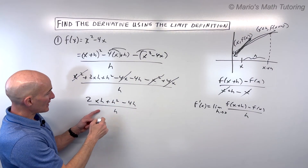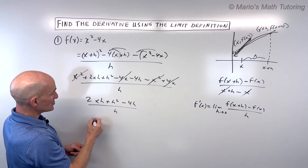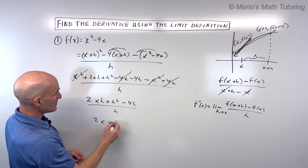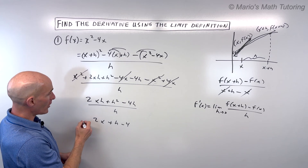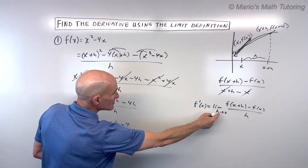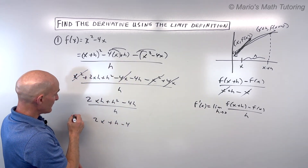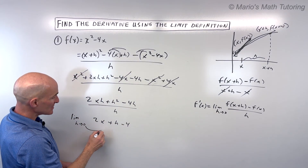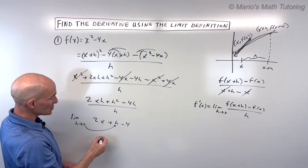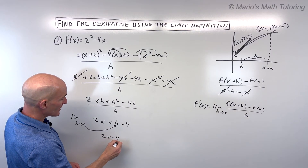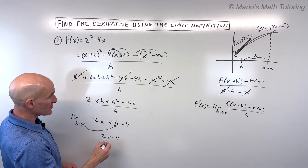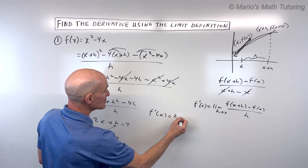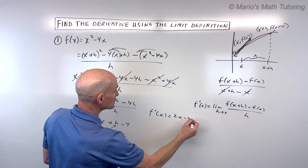Now I can divide each of these groups by h, which leaves us with 2x plus h minus 4. But remember, this is the limit as h approaches 0. So if I put 0 in for h, I get 2x minus 4. So our derivative f prime of x equals 2x minus 4.